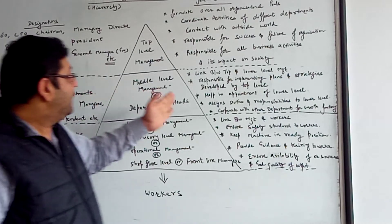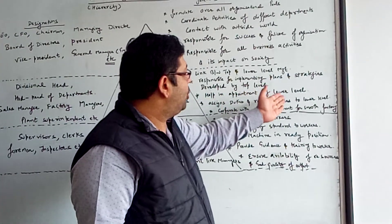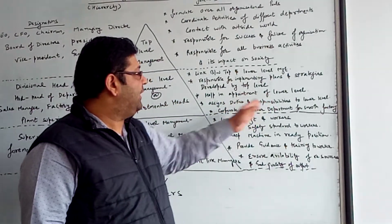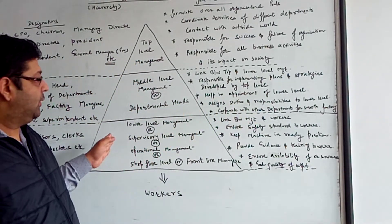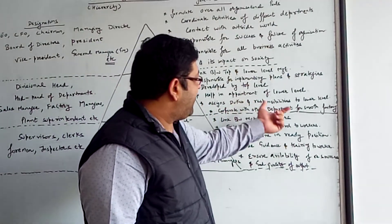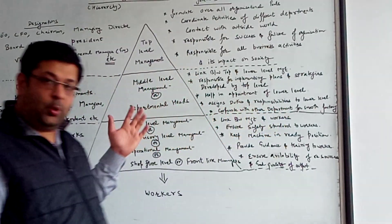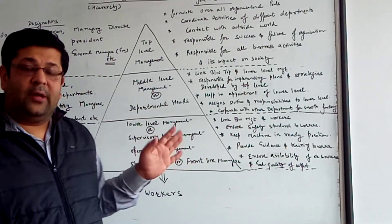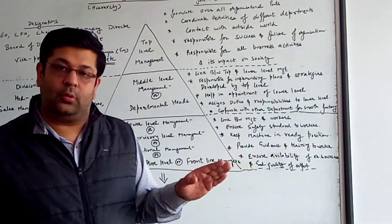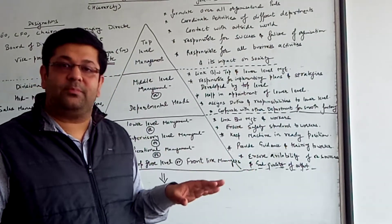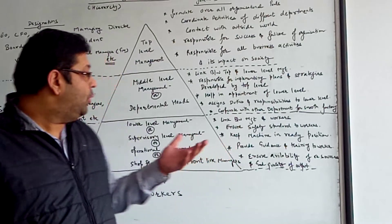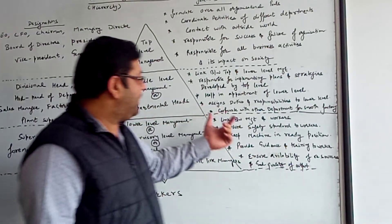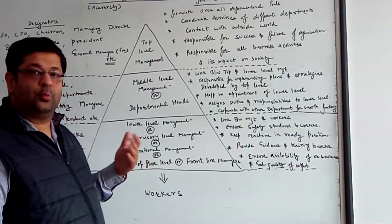Middle level managers also help in appointing lower level managers and assign duties and responsibilities to them. They need to cooperate with other departments for smooth functioning. For example, a sales manager needs to sync with the production department and finance department. It is the responsibility of middle level management to cooperate with other departments for smooth functioning.